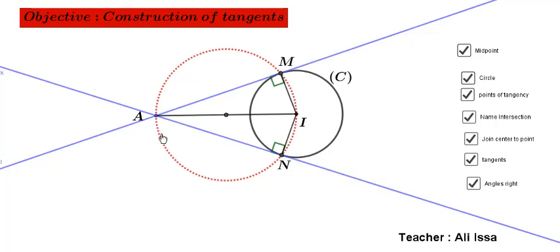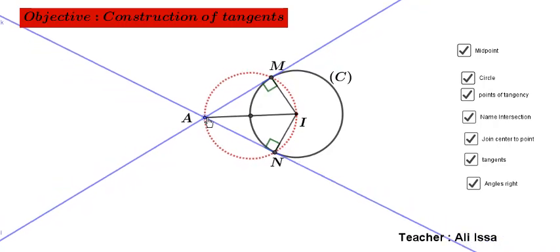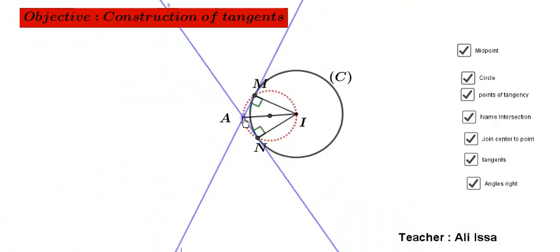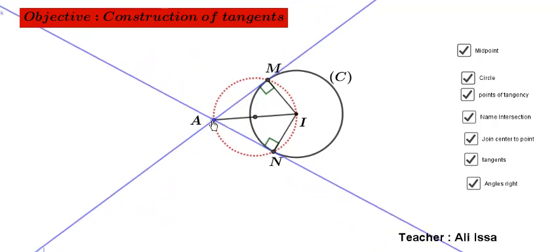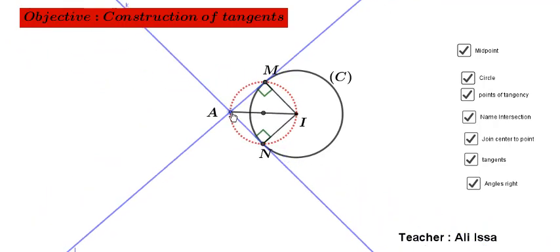Let's change the position of A. What do you observe? As A gets closer and closer to the circle C, we still have two tangents.